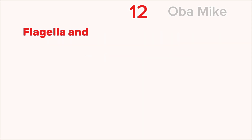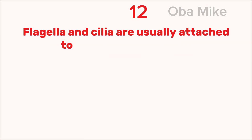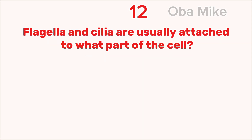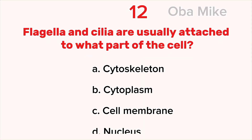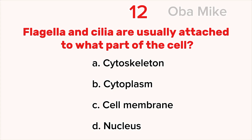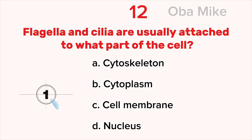12. Flagella and cilia are usually attached to what part of the cell? A. Cytoskeleton, B. Cytoplasm, C. Cell membrane, D. Nucleus. The correct answer is C. Cell membrane.